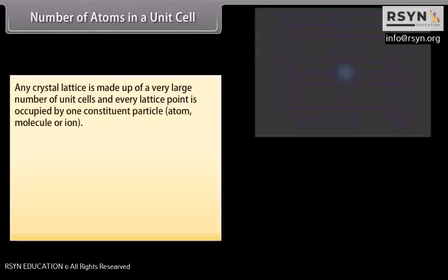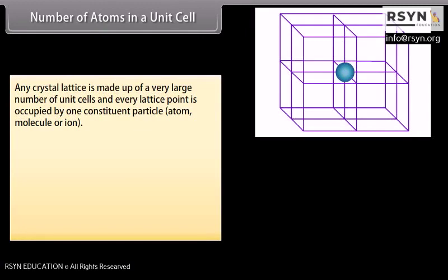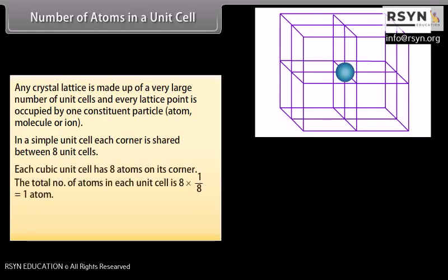Any crystal lattice is made up of a very large number of unit cells and every lattice point is occupied by one constituent particle — atom, molecule, or ion. In a simple unit cell, each corner is shared between 8 unit cells. Each cubic unit cell has 8 atoms on its corners, so the total number of atoms in each unit cell is 8 × (1/8) = 1 atom.